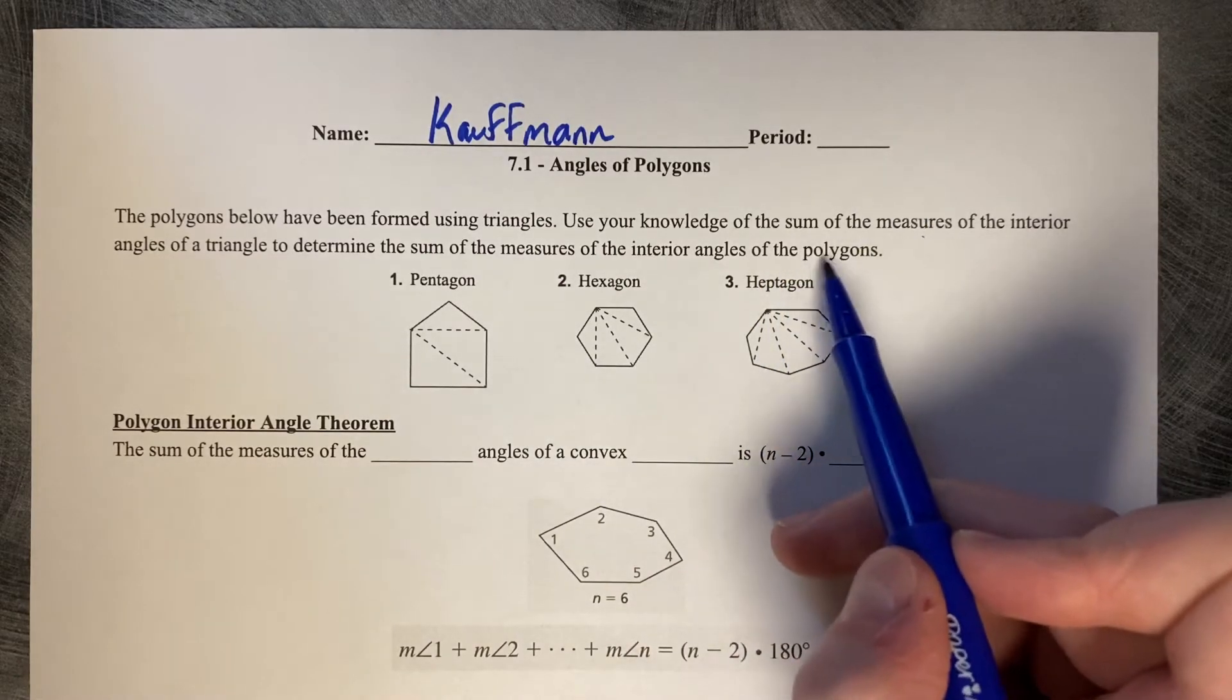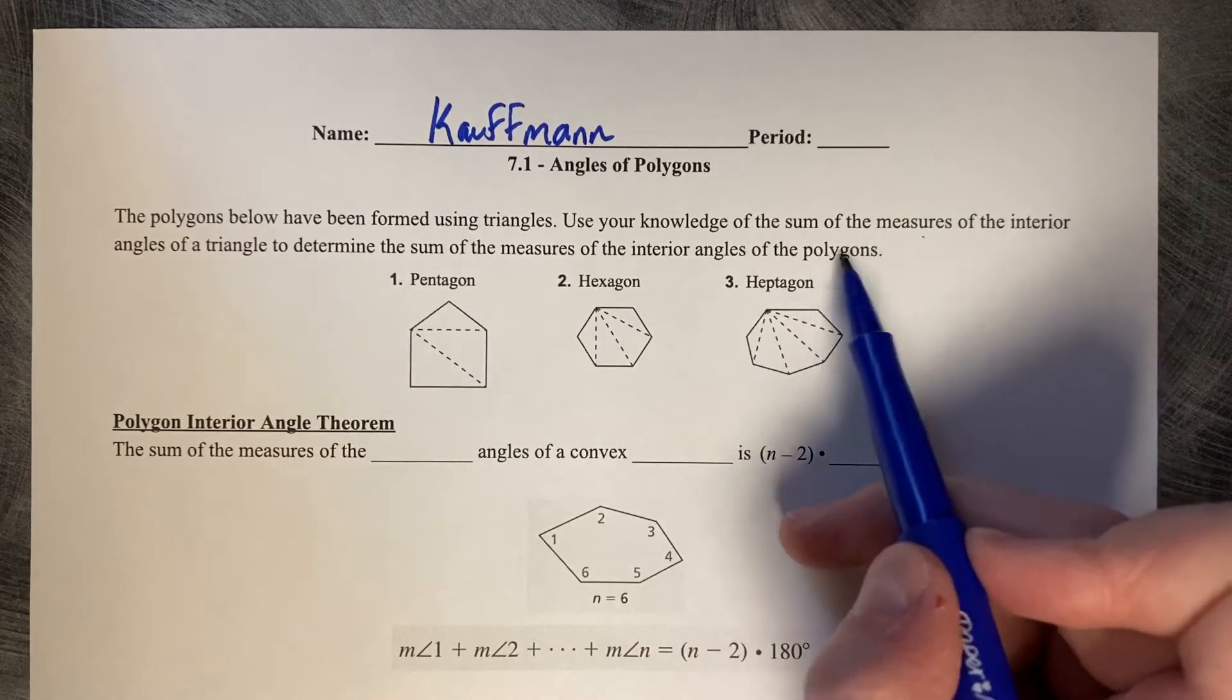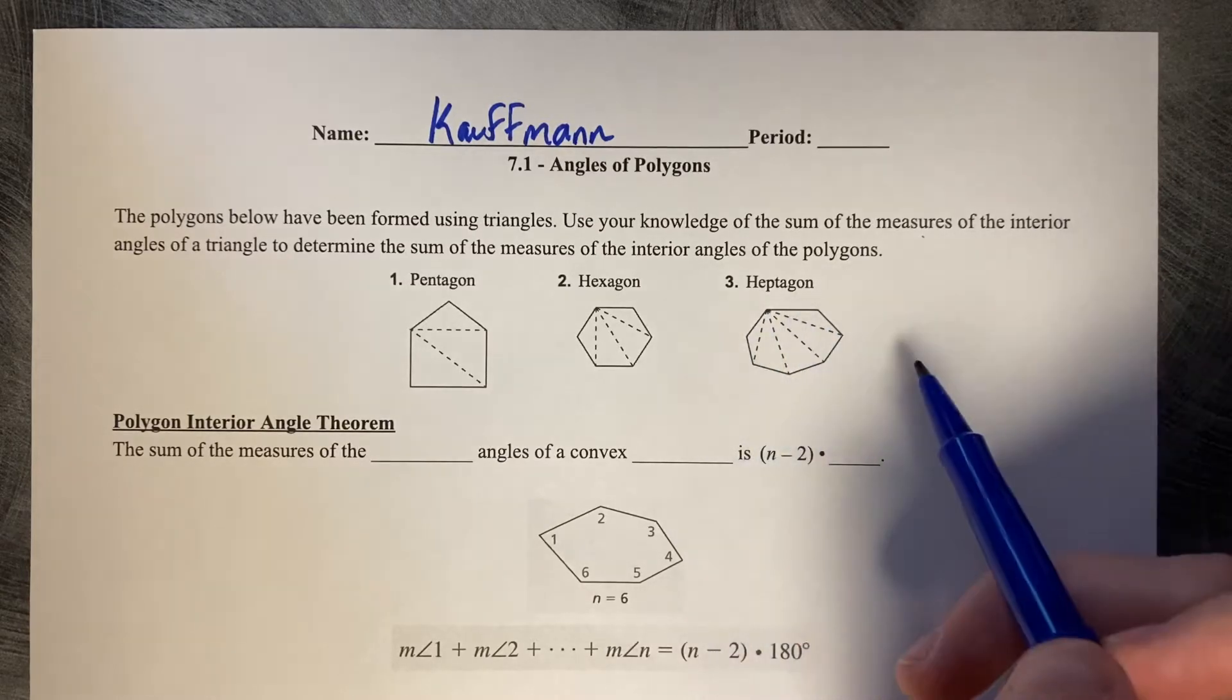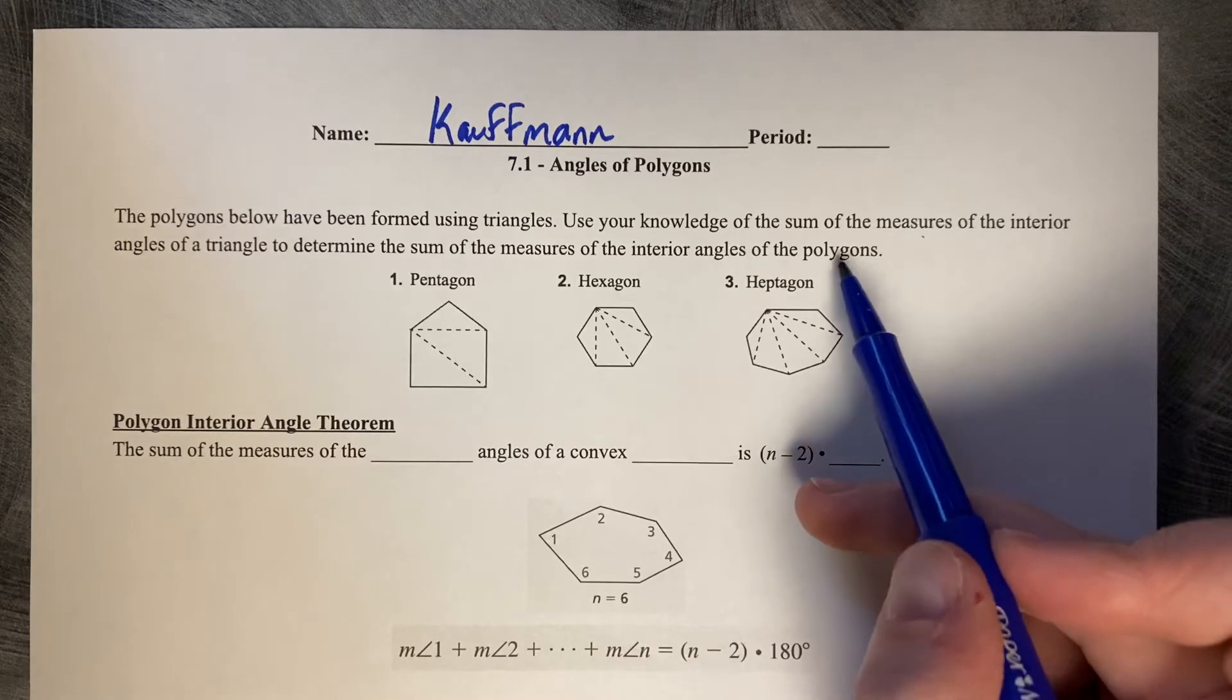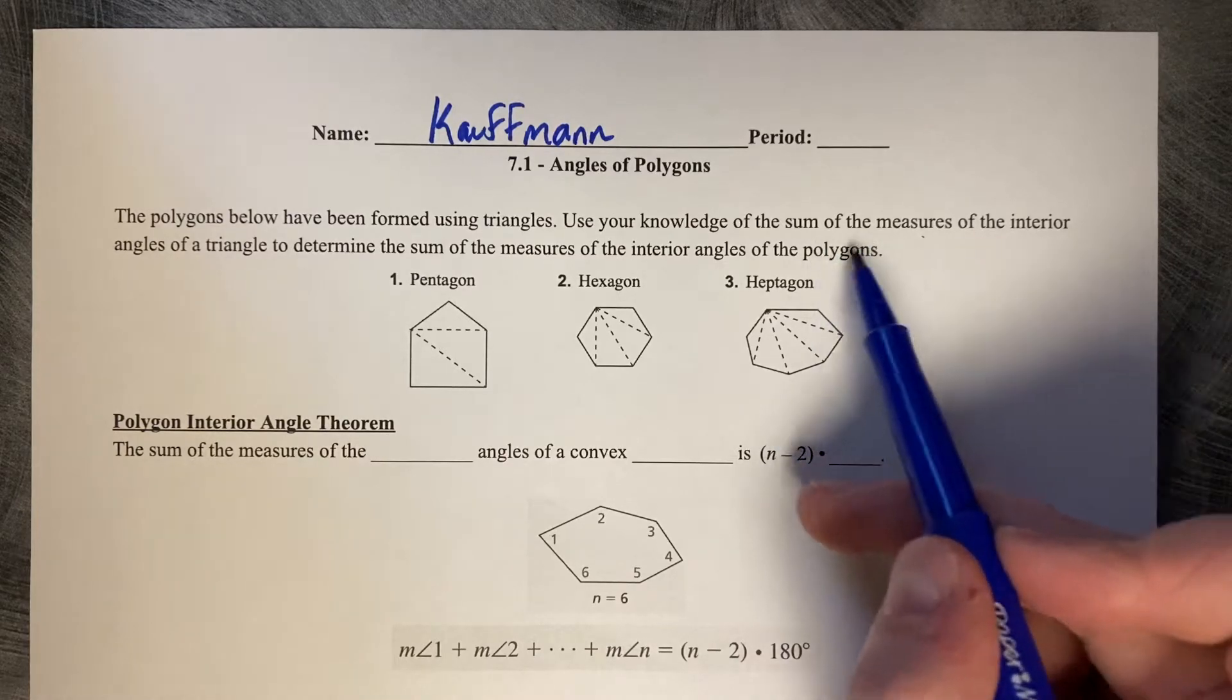The prefix poly means many and gon stands for an enclosed figure, so this is a many-sided figure. So even a triangle, a three-sided figure, is considered a polygon.